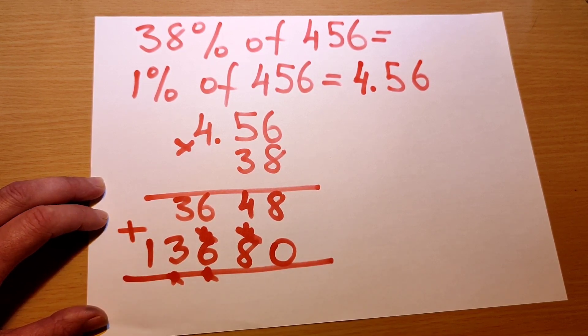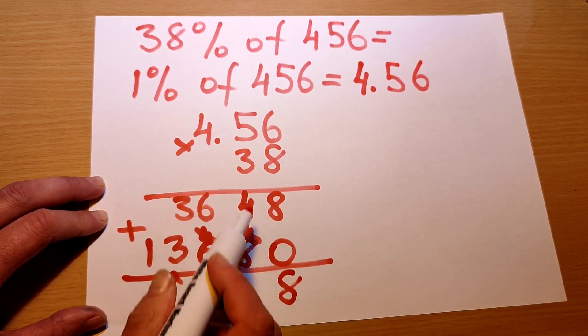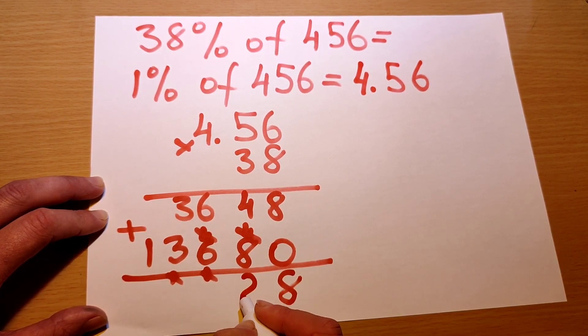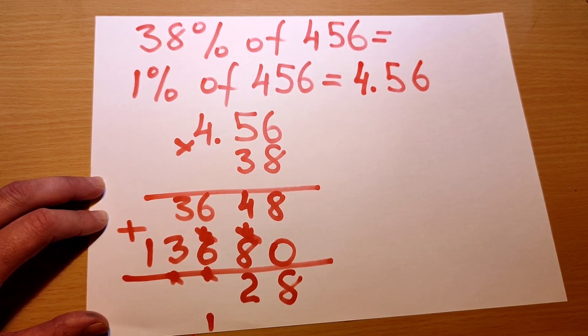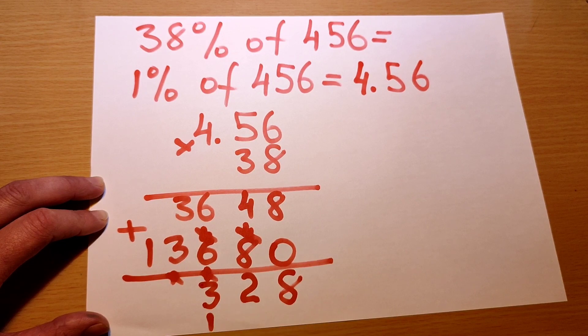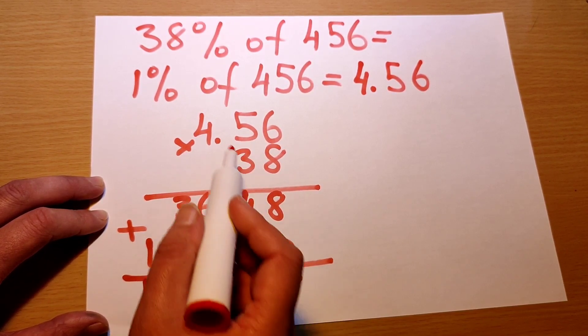Now let's add these two rows together. 8 add 0 is 8, 4 add 8 is 12, and we carry the 1. 6 add 6 is 12, and one more is 13, carry 1 to the next column. 3 and 3 is 6, and we carried 1, so 7, and 1 here. And don't forget to put your decimal point—it's two decimal places here, so two decimal places from the end, 173.28.